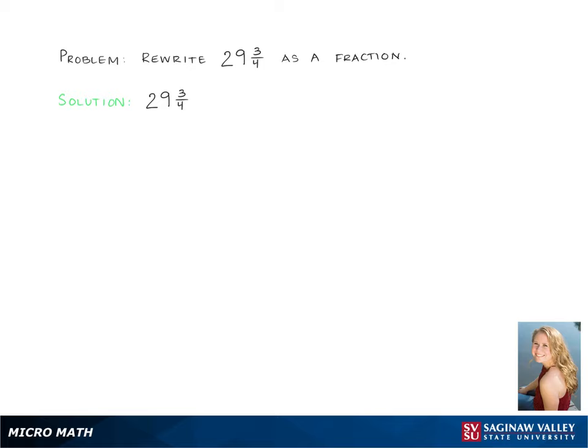Here we are rewriting the mixed number 29 and 3 fourths as a fraction. This really means 29 plus 3 fourths. So what we're going to do is we're going to write that out.